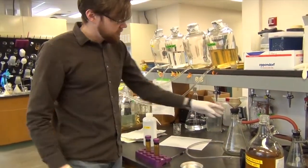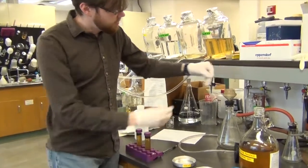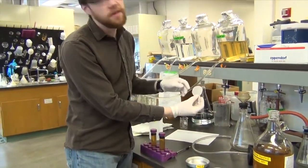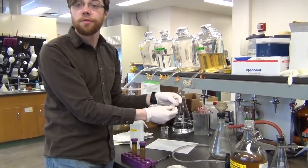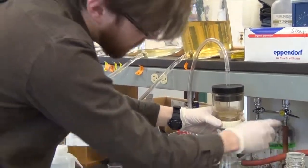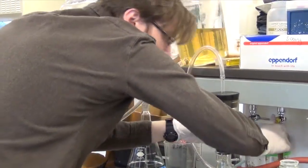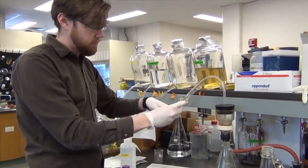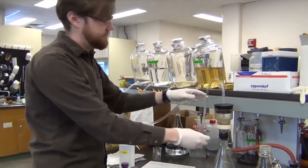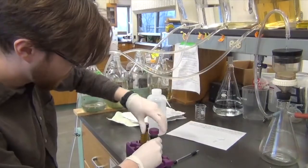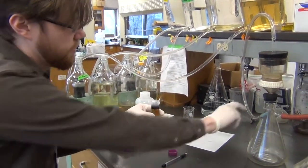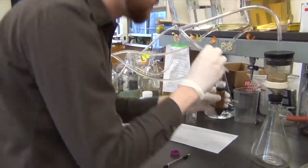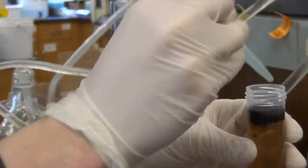So this is the aspiration setup. We have a sidearm flask and a filter setup with a 20 micrometer filter. This will collect all of the light fraction and allow the SPT to pass through which we will keep and recycle. This is connected to a vacuum. So I'm going to pull the vacuum. What's important here is that I also collect it off from the sides.